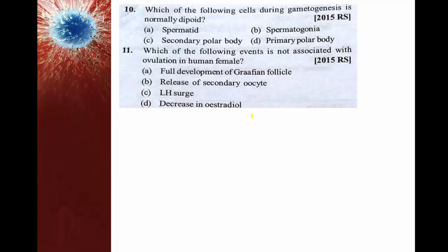Which of the following cells during gametogenesis is normally diploid? Spermatids are a product of meiosis 2, therefore haploid. The second polar body produced during oogenesis is also haploid. The first polar body is also haploid. Spermatogonia is the starting cell for spermatogenesis and is the only cell in diploid condition. So the right answer is option B.